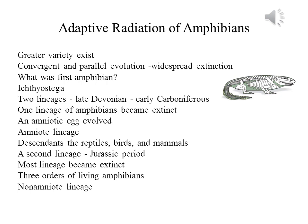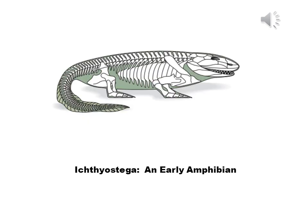The two lineages of early amphibians from the late Devonian and early Carboniferous can be distinguished by how the roof and the posterior portion of the skull attach to each other. One lineage became extinct late in the Carboniferous — an amniotic egg that resisted drying evolved in this group. This lineage is called the Amniote lineage, and its descendants are the reptiles, birds, and mammals. The second lineage flourished into the Jurassic period, and most of it became extinct, but not before giving rise to the three orders of living amphibians. This lineage is known as the non-amniotic lineage.